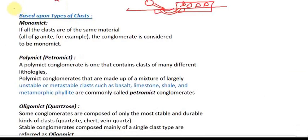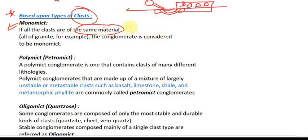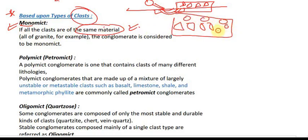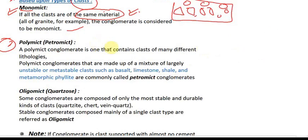Now, based upon types of clasts, we have also classified conglomerate and breccia. First is monomict — meaning all clasts are of the same material. For example, all clasts are granite — all fragments are approximately of granite. Second is polymict or petromict — meaning clasts are of many different rock types: for example, basalt, limestone, shale, phyllite. If conglomerate or breccia is made from fragments of different rock types, we call it petromict conglomerate.